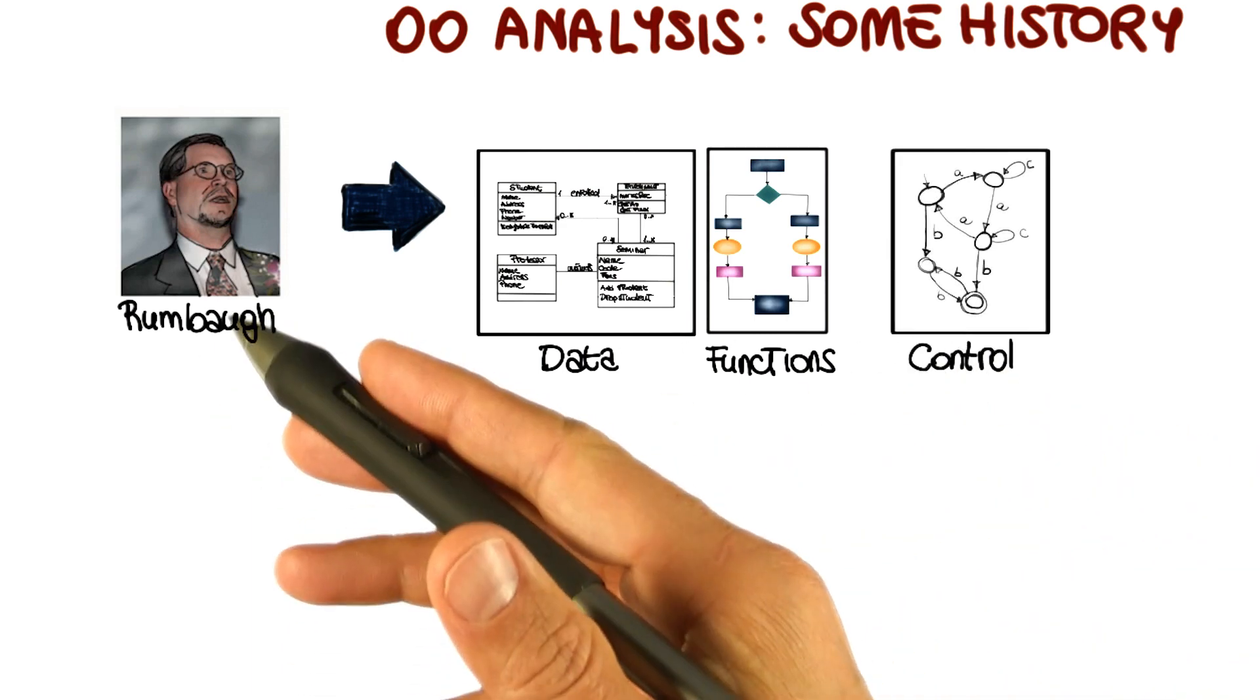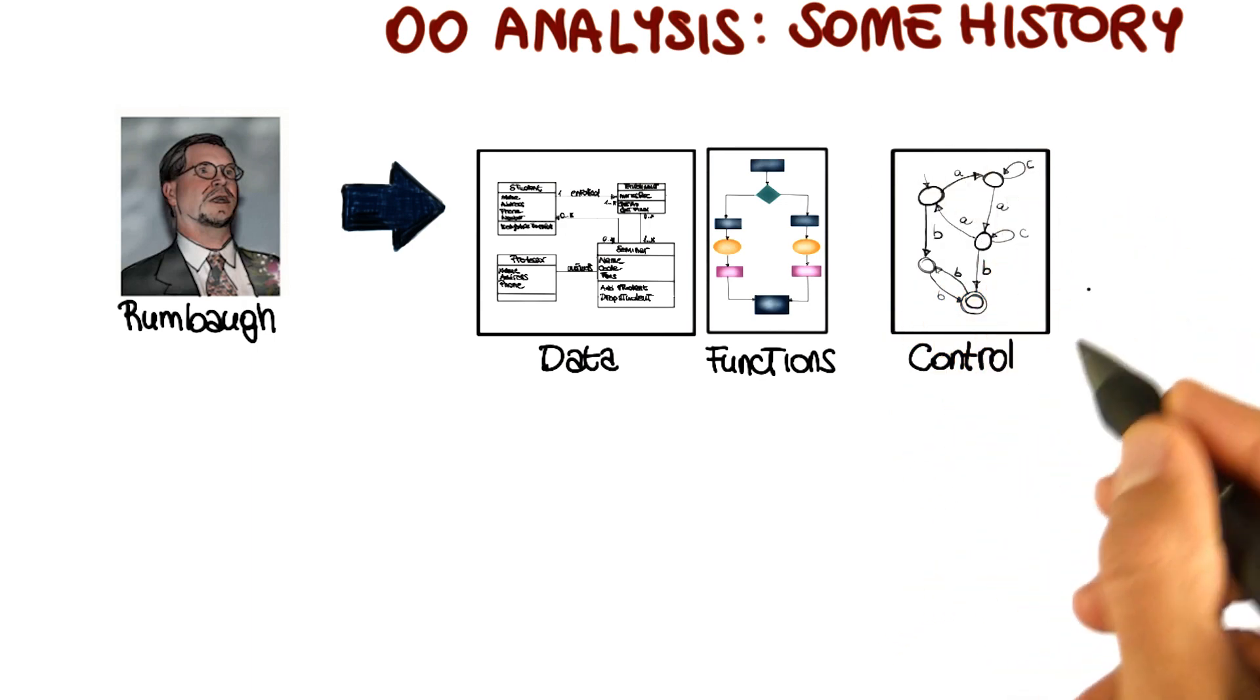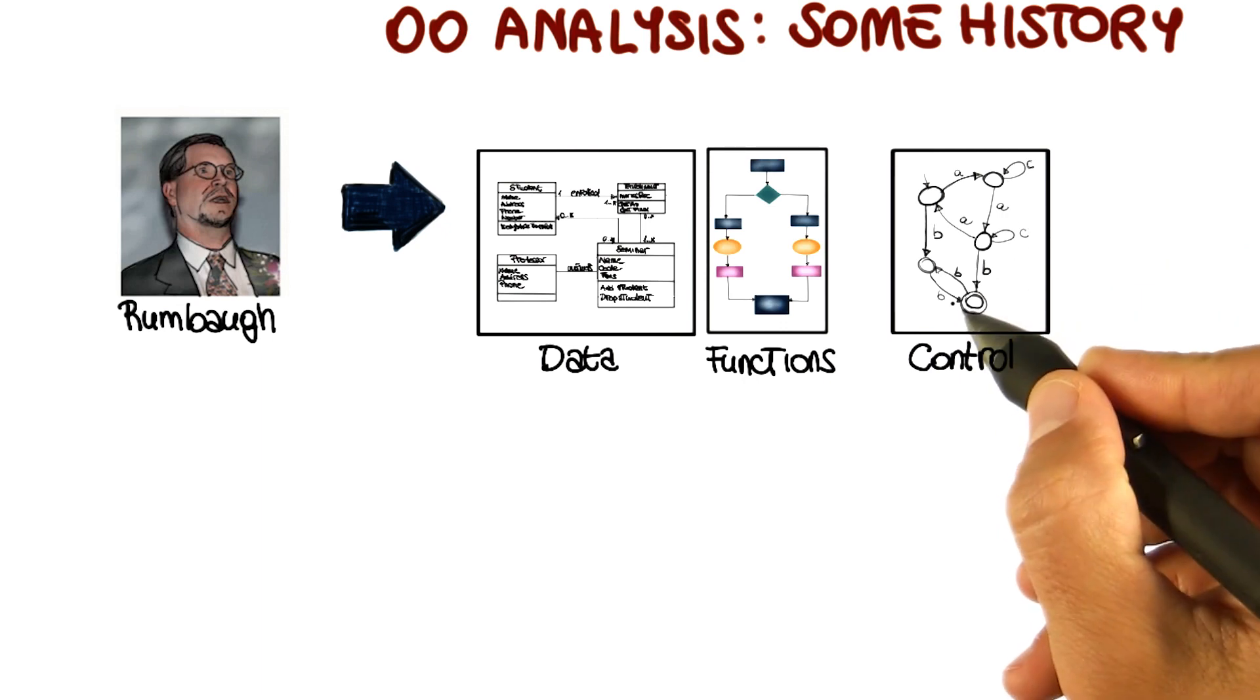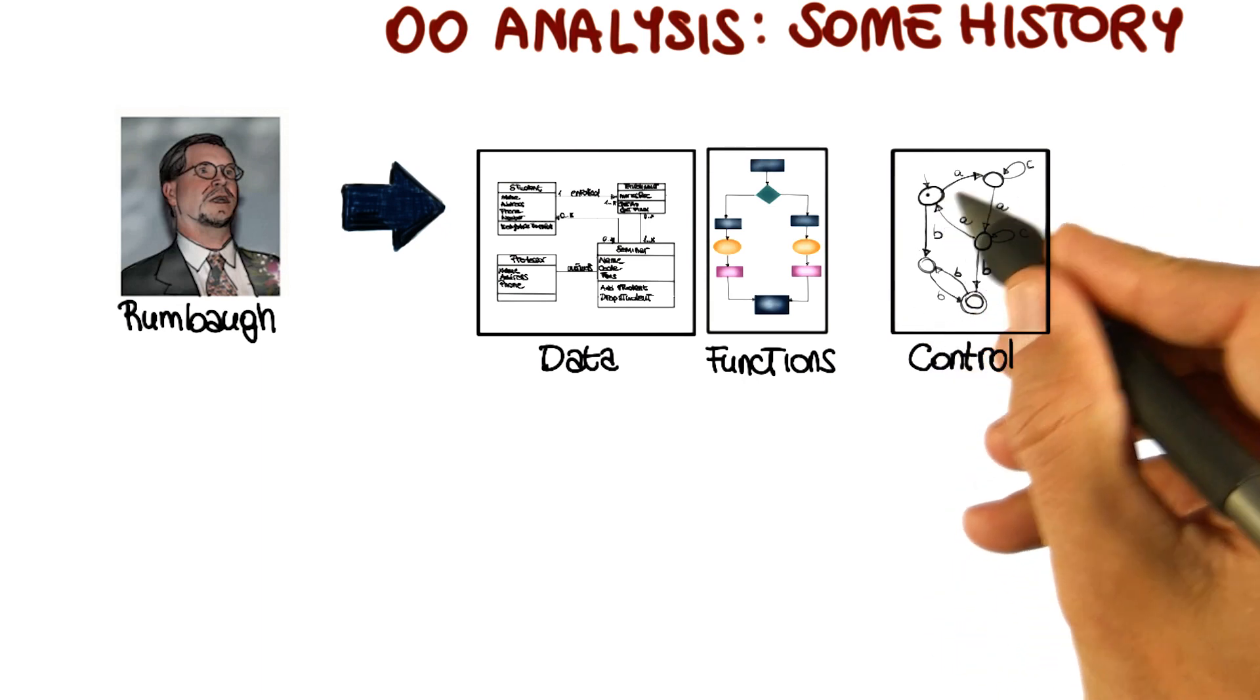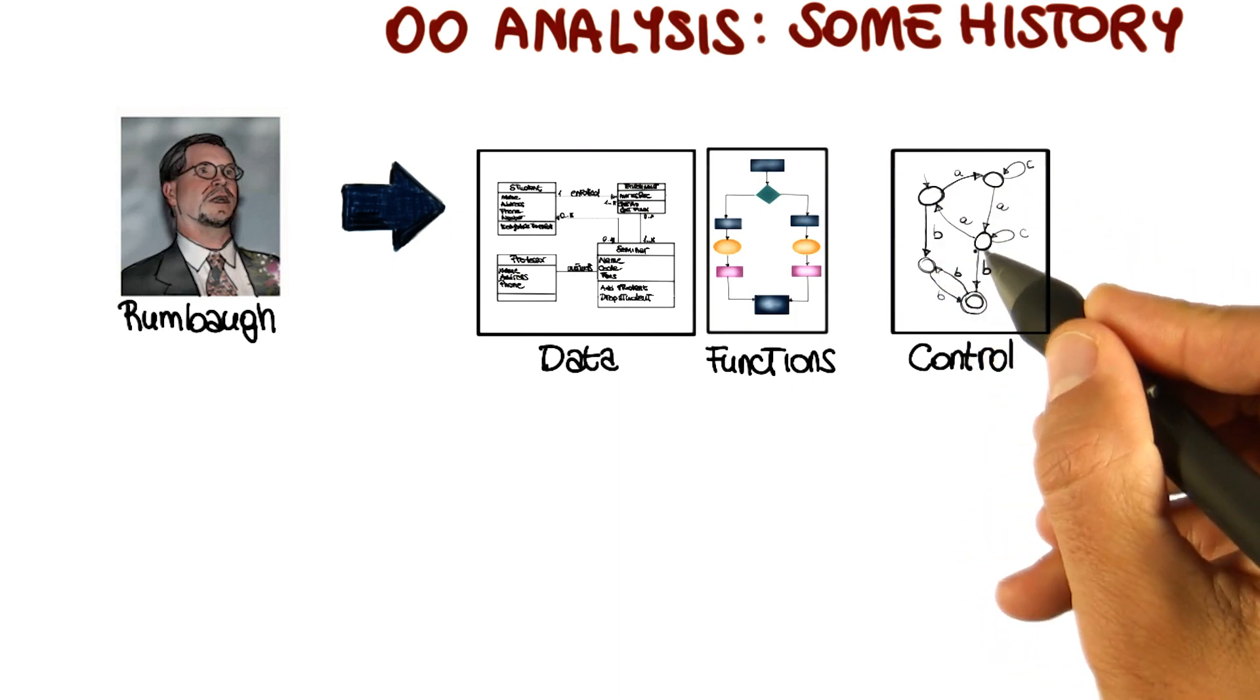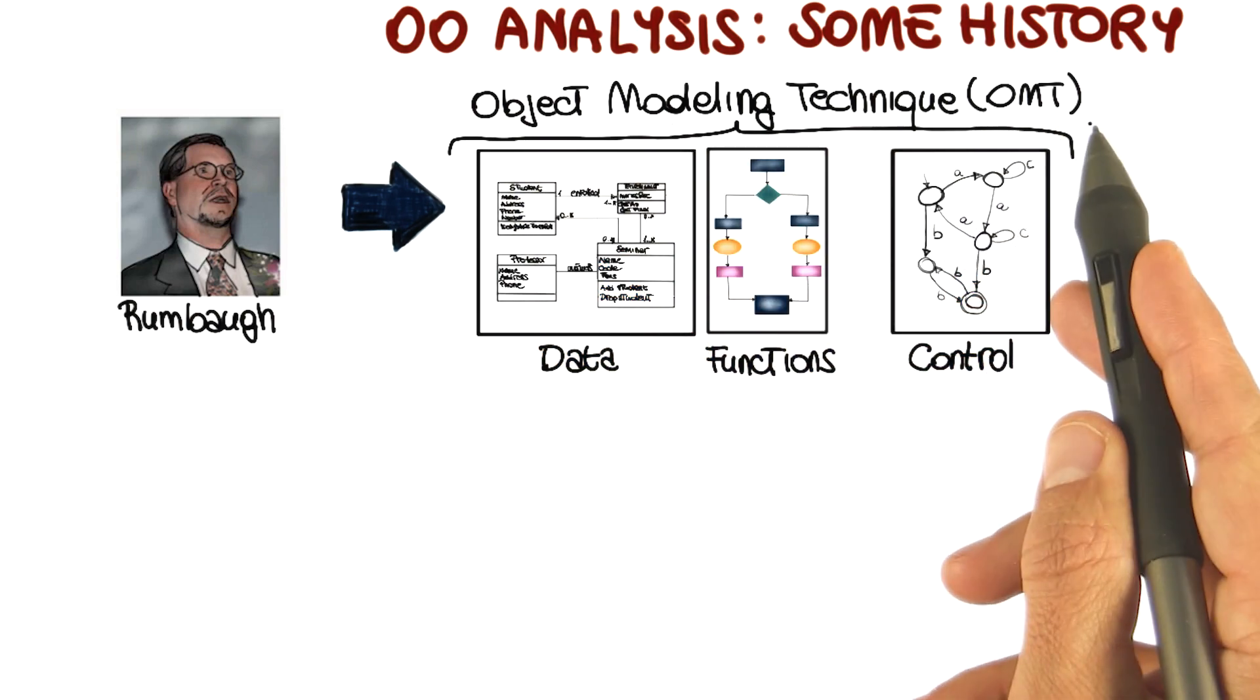The third model in Rumbaugh's methodology had to do with control. It represented the dynamic aspects of a system and used state machines, which we will cover in more detail, to show how a system would evolve from one state to another based on what happened to the system. These three models together represented the object modeling technique, or OMT.